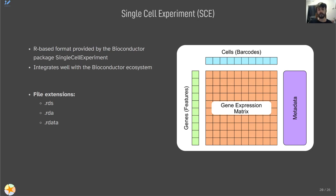Our next format is the SingleCellExperiment format. This is an R-based format provided by the Bioconductor package called SingleCellExperiment. Similar to how Seurat works with Seurat tools, SingleCellExperiment works closely with the Bioconductor ecosystem — all different types of Bioconductor tools for single cell analysis will be most compatible with this format. The file extensions are exactly the same as Seurat — .rds, .rda, .rdata — which can get confusing. This format also contains all of our metadata and data; the specific structure of each object isn't critical to go into depth here.